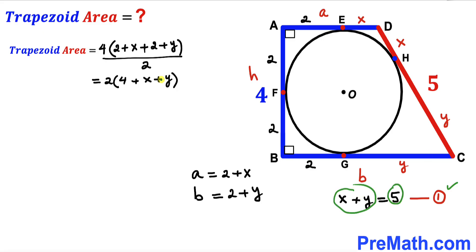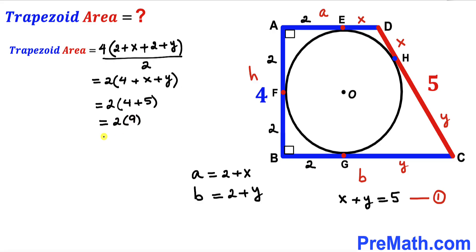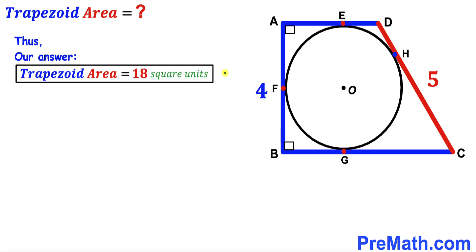From equation one we know x + y = 5. Substituting: Area = 2 × (4 + 5) = 2 × 9 = 18 square units. The area of trapezoid ABCD is 18 square units — that's our final answer. Thanks for watching, and please don't forget to subscribe for more videos.